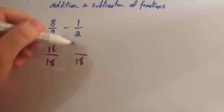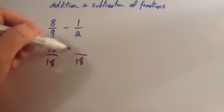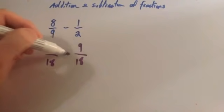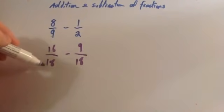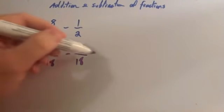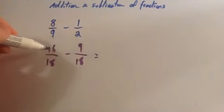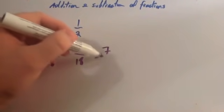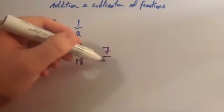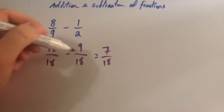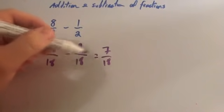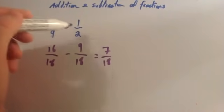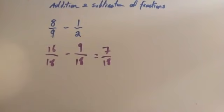To get from two to eighteen, you'd multiply by nine, so you multiply the top number by nine as well. So we've got sixteen-eighteenths subtract nine-eighteenths. Sixteen take away nine is seven, and the denominator is eighteenths. So sixteen-eighteenths take away nine-eighteenths is seven-eighteenths. The answer to our question is seven-eighteenths.